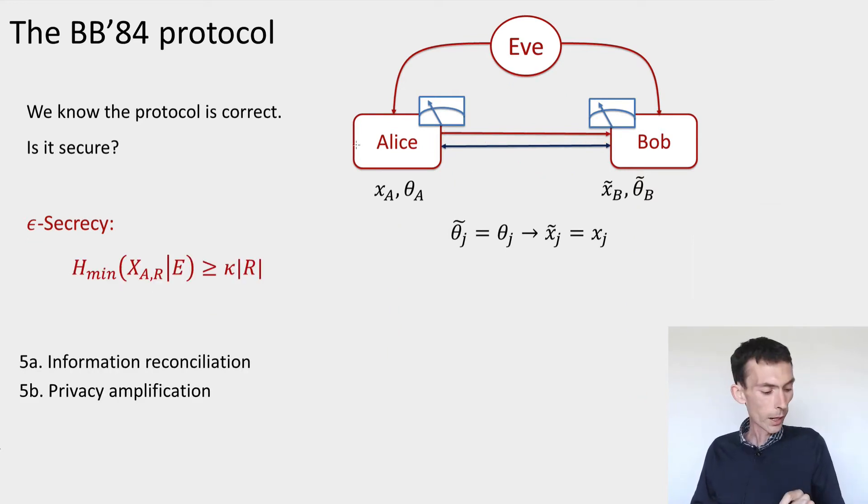We've already made one important step towards achieving this goal. This is achieved by privacy amplification, which told us that in order to achieve ε-secrecy, it's sufficient to obtain a weaker criterion, which is that the minentropy of Alice's raw key bits before the key is obtained, conditioned on the eavesdropper's side information E, is at least some amount. What is this X_AR?